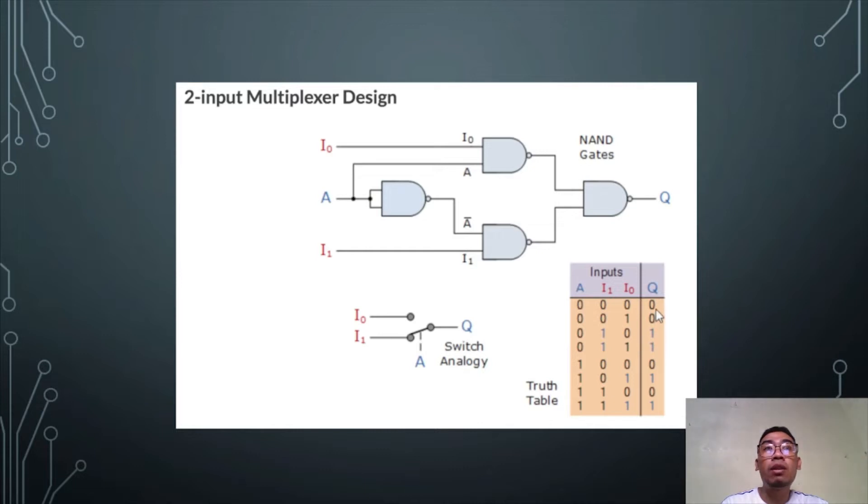regardless of the logic of I1. If A is equal to 1, the multiplexer will select I0 and pipe it to the output, regardless of the logic of I1.